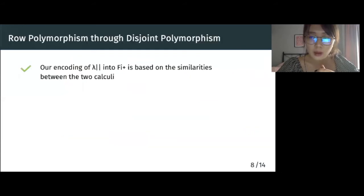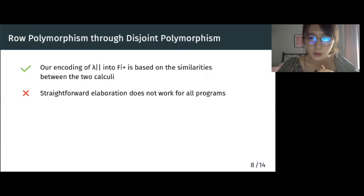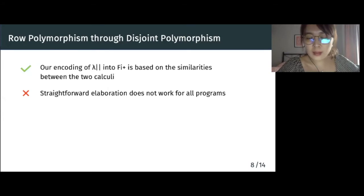Our encoding of lambda concat into fi+ is based on the similarity between the two calculi. However, while it clearly works for many example programs, the straightforward elaboration does not work for all programs. Indeed, it turns out that there is a subtle difference in the interpretation of compatibility quantification and disjoint quantification that makes the elaboration break down in some cases.